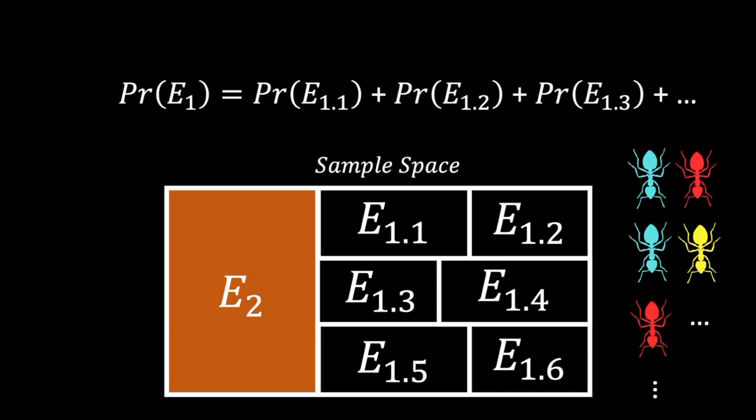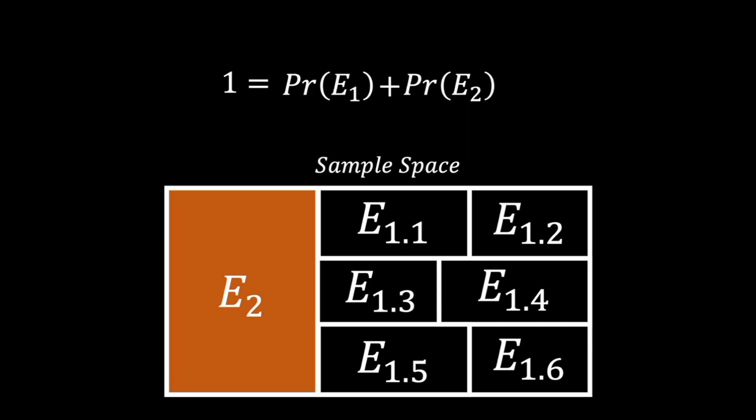A better way would be to leverage the binary nature of the sample space and recognize that the probability of the event of interest can be found by simply subtracting the probability of the other event from 1. The probability of this other event is often much easier to calculate, with our answer often being the complement of this other event.